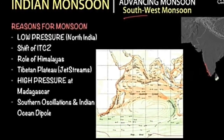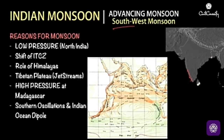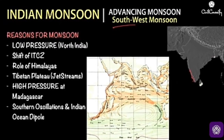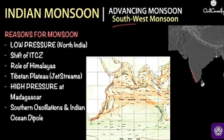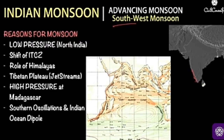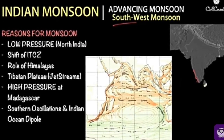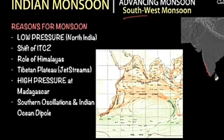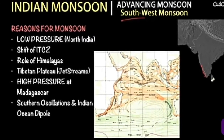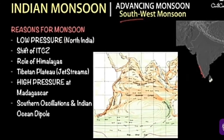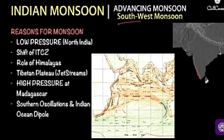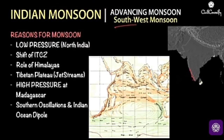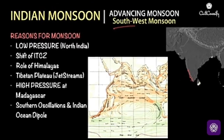What you are seeing and experiencing now is the advancing monsoon, or we call it the onset of monsoon. In the months of October and November we will be experiencing retreating monsoon, also called the withdrawal of monsoon — so, advancing of monsoon and withdrawal.